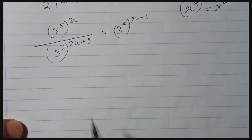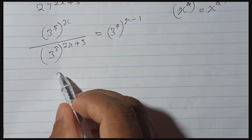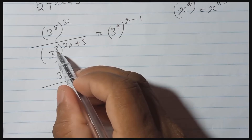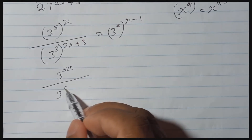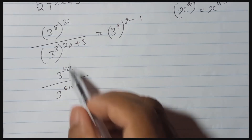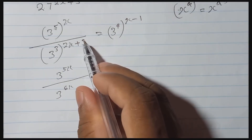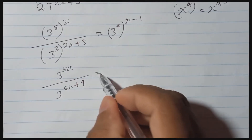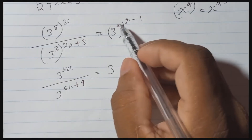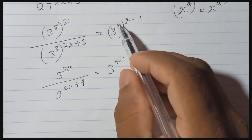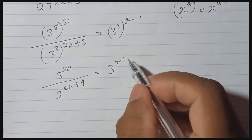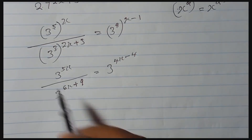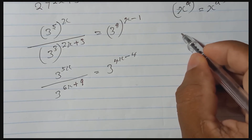Let's multiply: 5 into x gives 5x, so we get 3 to the power 5x. Then multiply by 3: 3 into 2x gives 6x, then 3 into 3 gives 9, so 3 to the power 6x plus 9. Then 3 into 4 gives 4x, and 4 into minus 1 gives minus 4, so 3 to the power 4x minus 4.